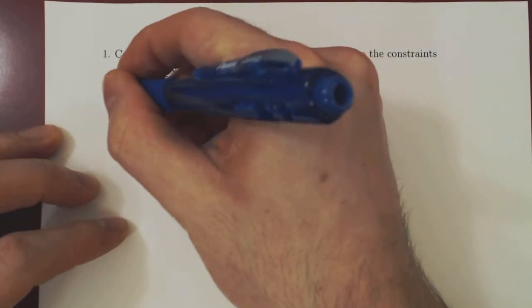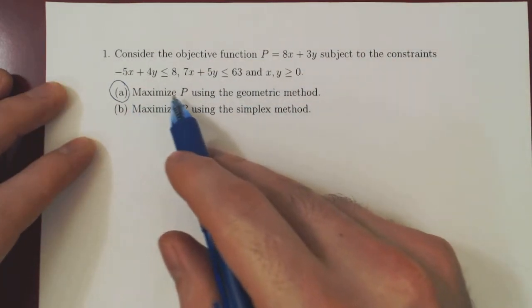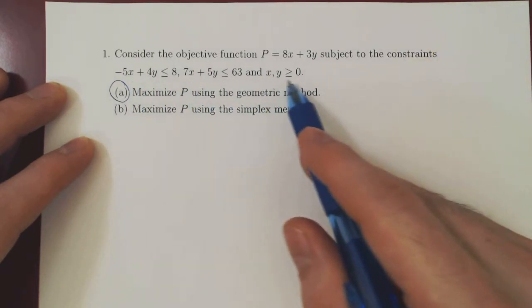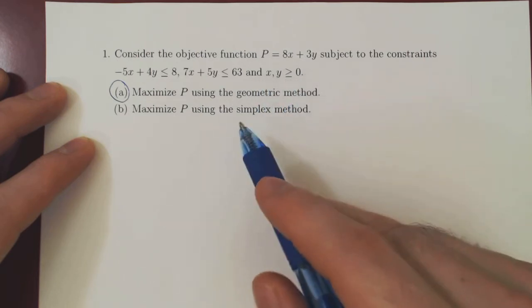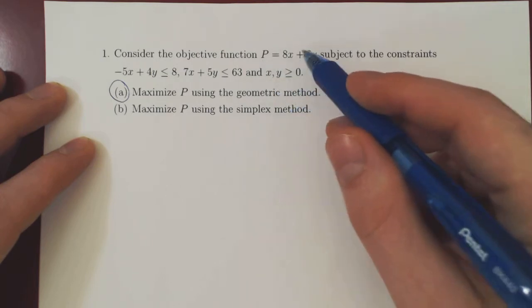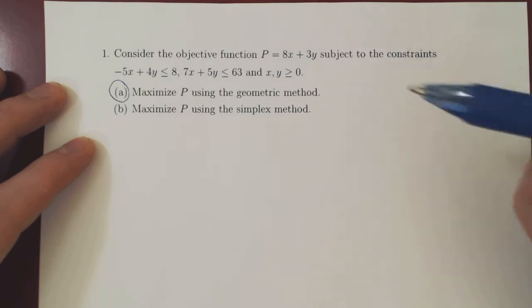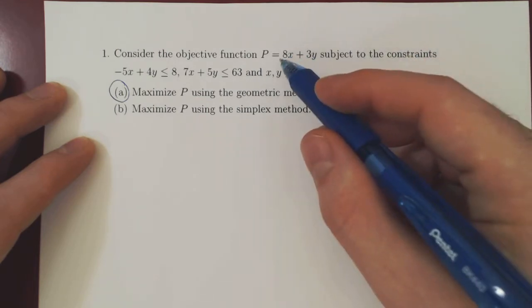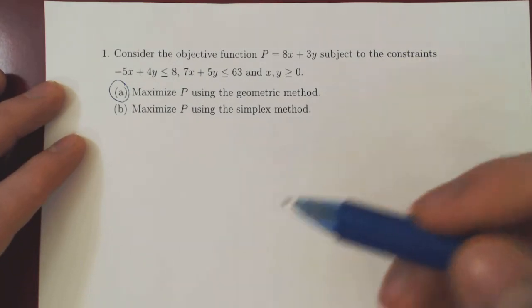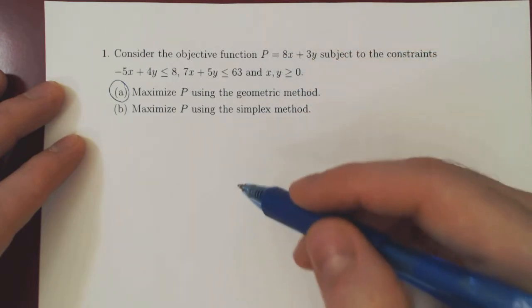So for now, let's use our geometric approach. And we know that all we need to do is to sketch in the first quadrant of the xy plane, as both x and y are non-negative, our feasible region. And we know that the maximum value of P will occur at one of the vertices of our feasible region.